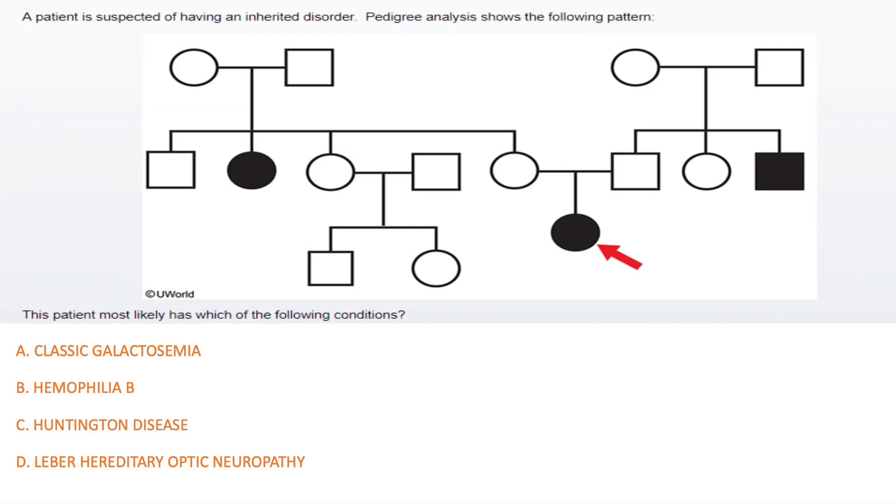Now to the next pedigree. Look at the parents: are the parents affected? No, they're not, then it's a recessive condition. Now I need to figure out, is it X-linked recessive or is it autosomal recessive? Look at the offspring: males and females alike, then it must be autosomal recessive. If it was males only I would say X-linked, but the female pointed here obviously says that males and females can be affected, then it's autosomal recessive.